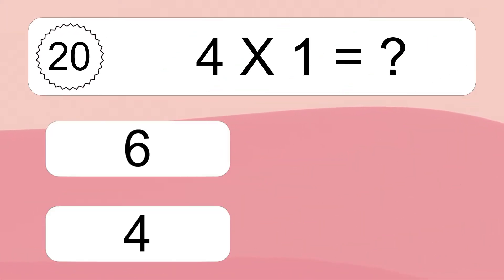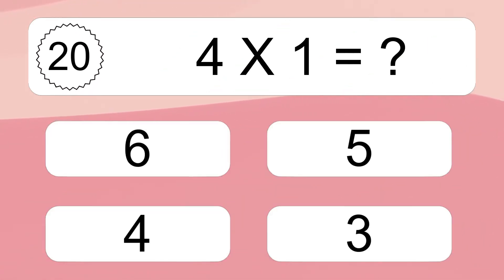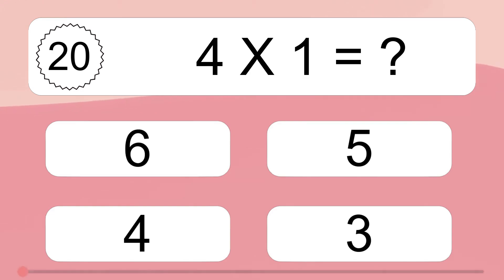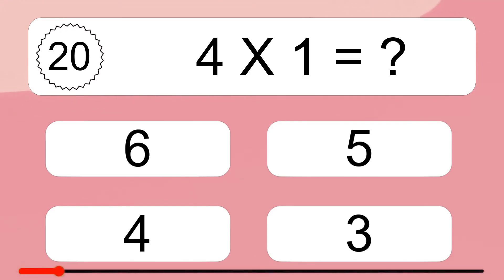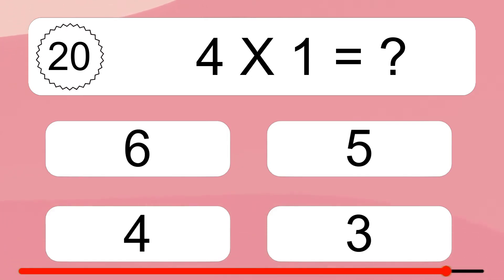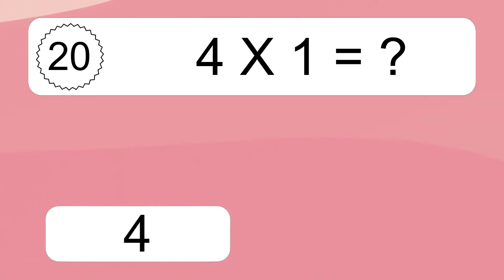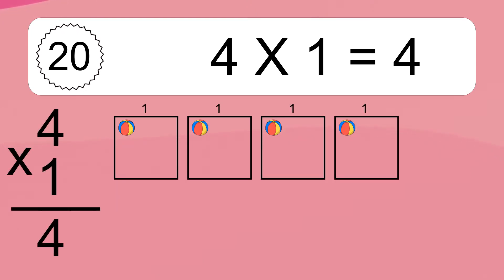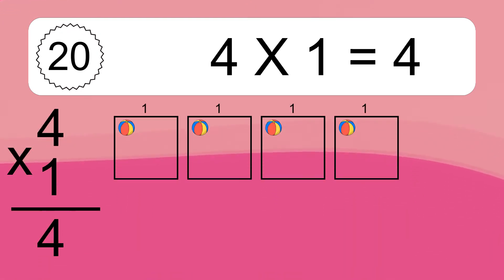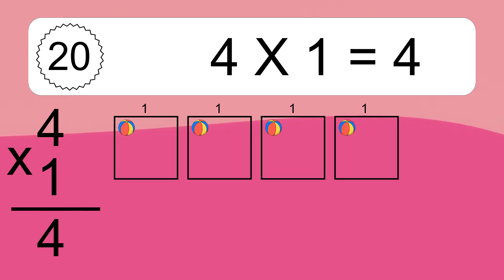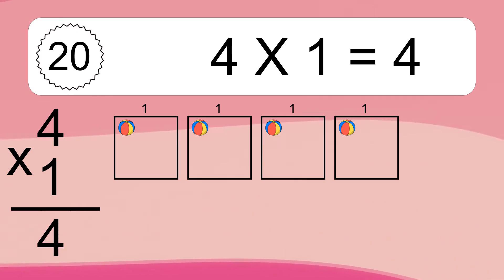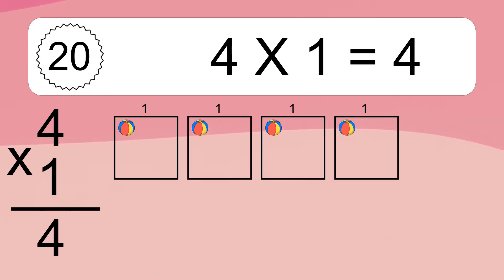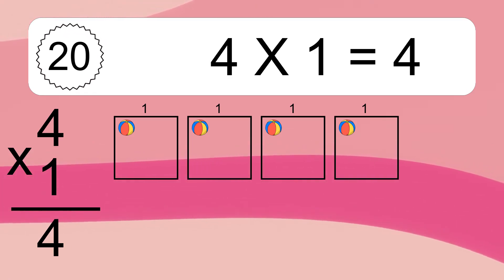4 times 1 equals what? 4 times 1 equals 4. We have 4 boxes, and each box has 1 colorful ball inside. If you count all the balls in all the boxes together, you will have 4 times 1 balls. This equals 4 balls.